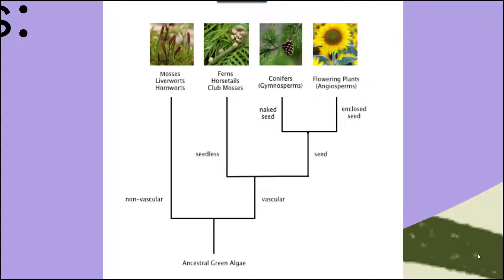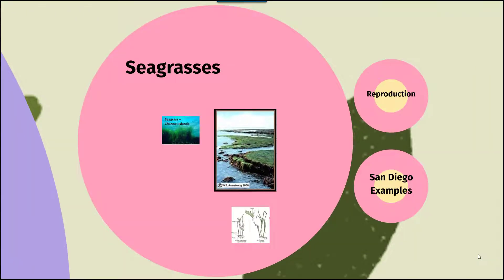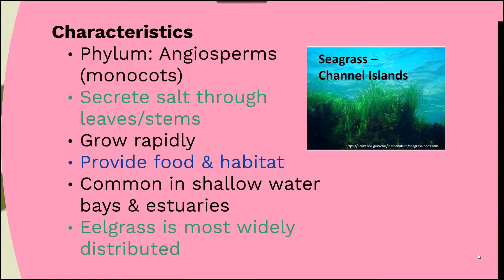So marine plants are going to have some special adaptations to deal with that. Seagrasses are part of the angiosperm group. They belong to a specific group called monocots, which relates to characteristics of the seed. They secrete salt through the leaves and stem. They can grow rapidly and are very good in terms of their provision of food and habitat for other organisms.